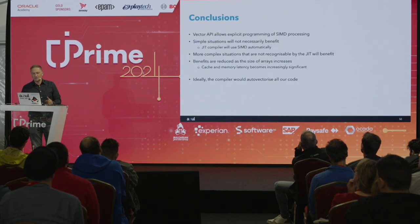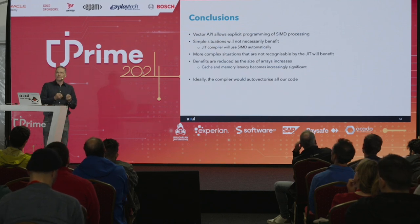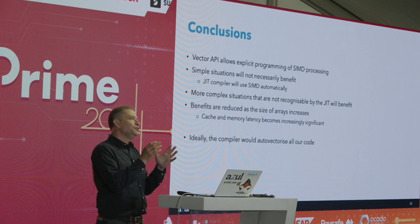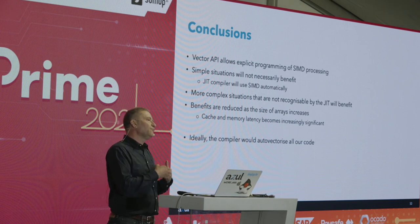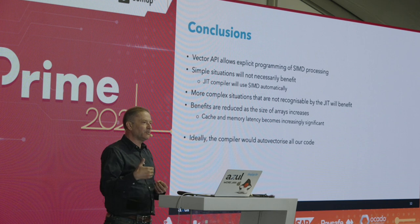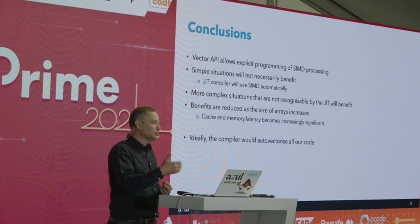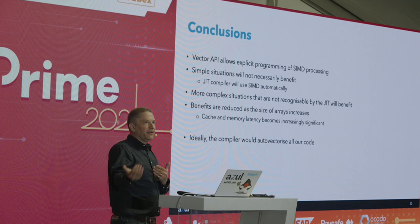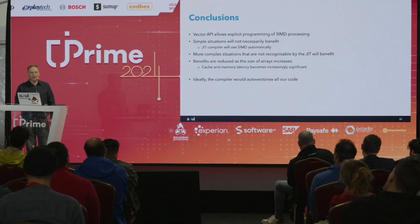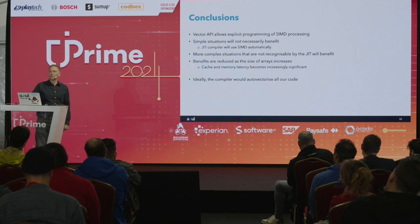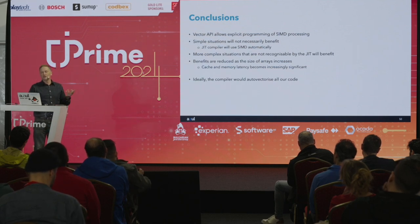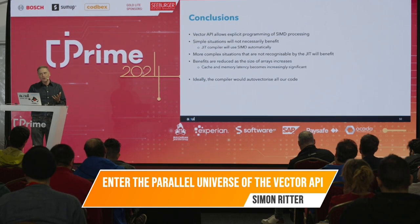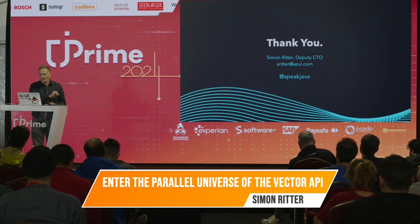To summarize: the Vector API allows explicit programming of SIMD. For simple situations you won't see much benefit. It's in more complex situations — especially with conditional branches — where you'll see more benefit. The benefits reduce as array sizes grow larger. Ideally the JIT compiler will auto-vectorize everything for you, so you shouldn't need the Vector API, but it's there if you do. Thank you.